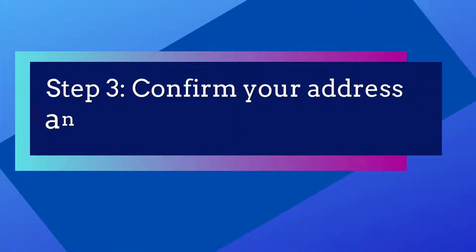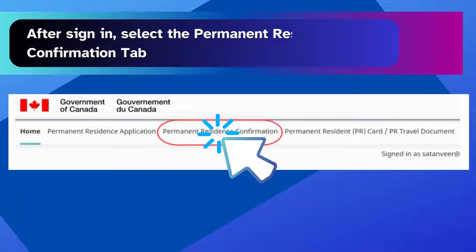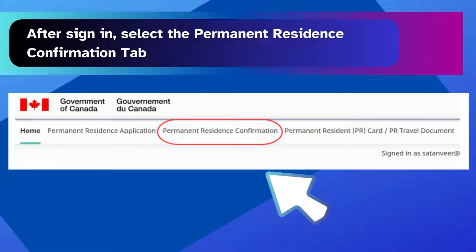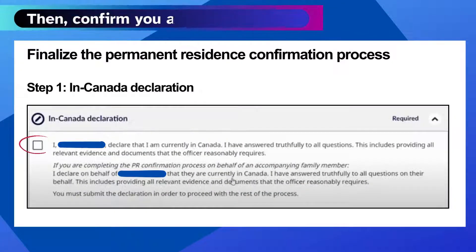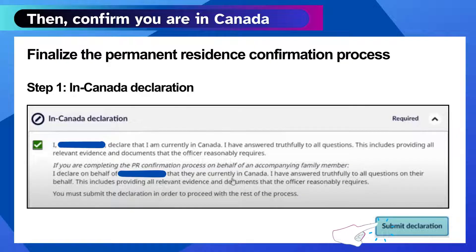Step 3: Confirm your address and upload your photo. Once you have signed in to the Portal, select the Permanent Residence Confirmation tab. Then, confirm that you are in Canada by ticking the 'In Canada Declaration' box and clicking 'Submit Declaration.'